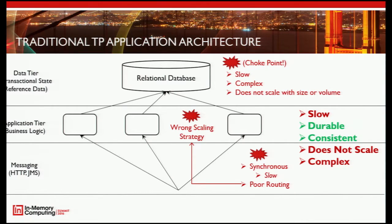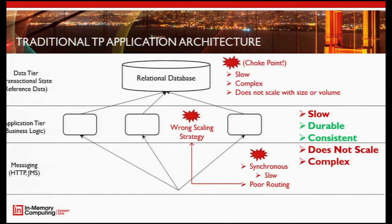On the messaging tier, these applications are typically built using HTTP and JMS — synchronous technologies. JMS is synchronous unless vendor-specific extensions make it asynchronous. Because they're synchronous, they are slow and have poor routing. If you're using HTTP, there's really no routing mechanism. The lack of routing leads to a half-hearted effort to scale the system by horizontally scaling the business logic, but all you end up doing is adding more load onto the choke point.